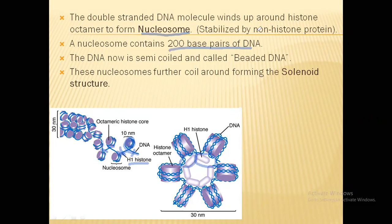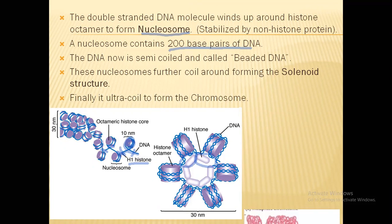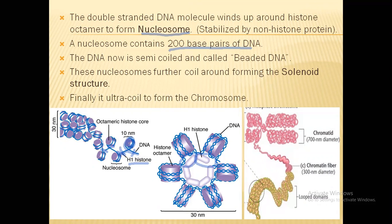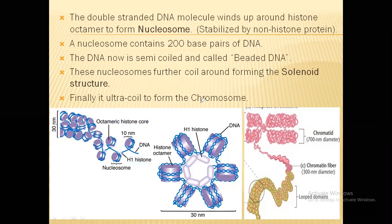These nucleosomes then coil into a spiral solenoid structure. The beaded DNA coils in a four-fold circular pattern to form the solenoid structure. This solenoid structure then coils around further to form chromatin fiber, which condenses to form the chromosome.